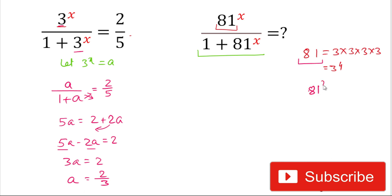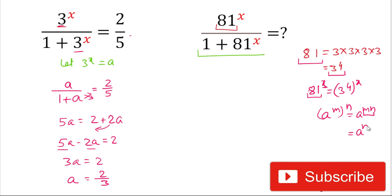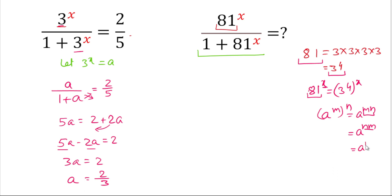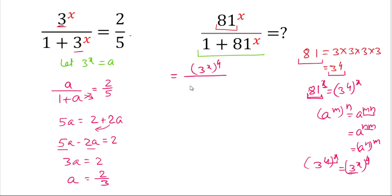Now we calculate the value of 81 to the power x. Since 81 is 3 to the power 4, we can write 81 to the power x as (3 to the power 4) to the power x. Using the power rule — a to the power m, all to the power n equals a to the power mn — we can rewrite this as 3 to the power x, all to the power 4. So in place of 81 to the power x we write (3 to the power x) to the power 4.